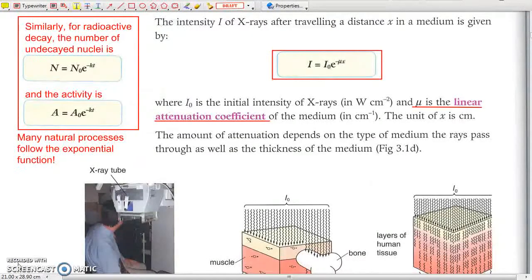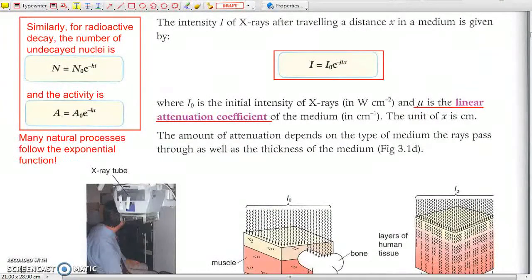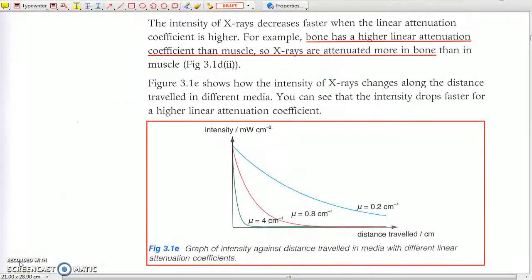The linear attenuation coefficient indicates the degree of attenuation of the medium. In general, the linear attenuation coefficient increases with the density of the medium, and so the transmitted intensity decreases more. In particular, the linear attenuation coefficient of bone is about five times that of soft tissues. Refer to page 113 for quick reference. The overall attenuation depends on the nature of the medium as well as the depth that the wave has transmitted, and the transmitted intensity falls exponentially as shown in Figure 3.1e.